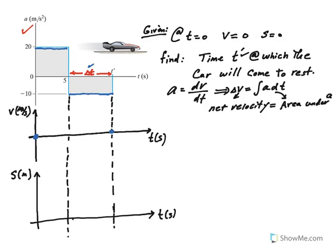Net velocity is equal to area under acceleration diagram. If we calculate the area under acceleration here, we know that this is 20 by 5, so this is a rectangle with area of 100. And this area here, we don't know what delta t is, but this is negative 10 times delta t. Now we say, okay, we're starting at 0 speed, and then we keep adding the area.